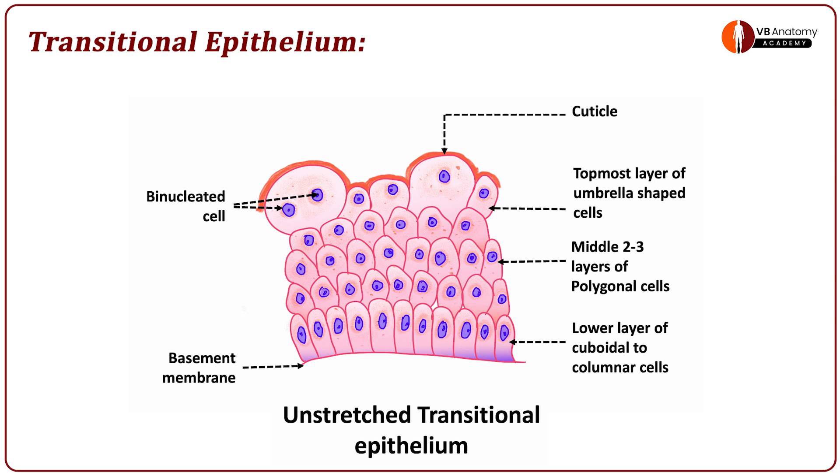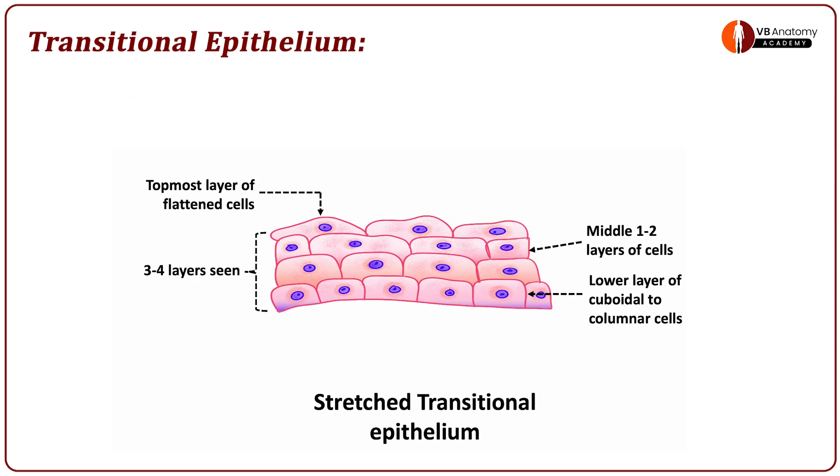Here the point I am making is transitional epithelium is always to be drawn as unstretched as you are seeing here and then stretched as you are seeing here. As you can see this appears to be an epithelium which is much shorter in height. It is stretched. When you stretch transitional epithelium, the number of layers which I told you was 4 to 6 now gets reduced to 3 to 4 as seen in this diagram. Remember to draw both stretched and unstretched transitional epithelium whenever you are asked to do this diagram in exams.